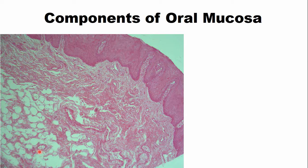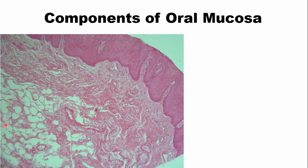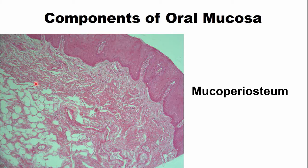This layer of the connective tissue is known as the submucosa, which contains fat cells. In certain parts of the oral cavity, for example in the palate, the submucosa layer is absent and the oral epithelium and connective tissue are directly attached to the bone. This arrangement is called mucoperiosteum, and it is present on the hard palate.